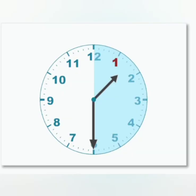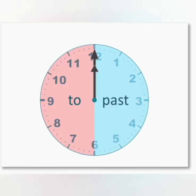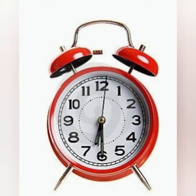We have already learned that if the minute hand moves from twelve to six — that is halfway — it means half past. Now let us see more divisions in the clock. Look at this clock. The right-hand side shows past and the left-hand side shows to. So this is half past six, and you know it already.